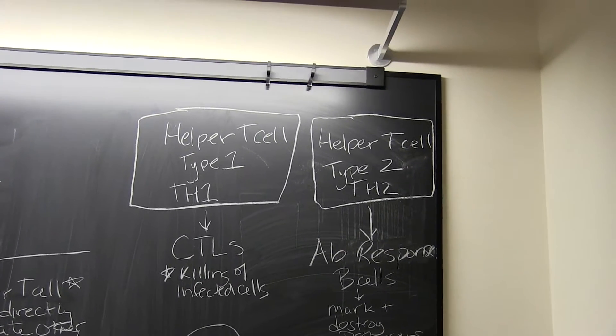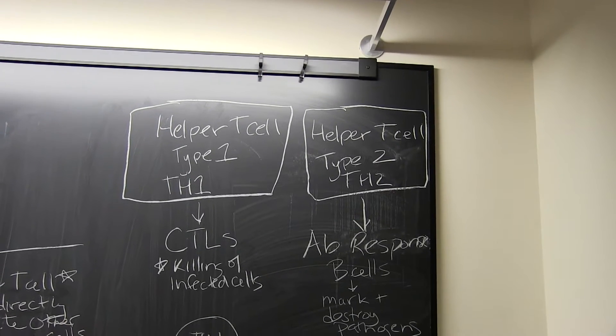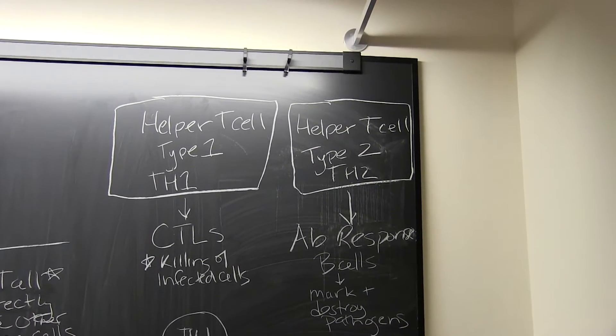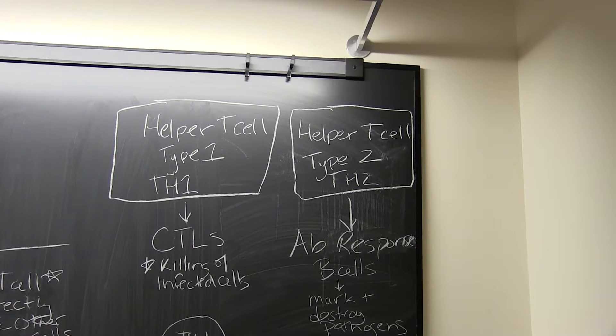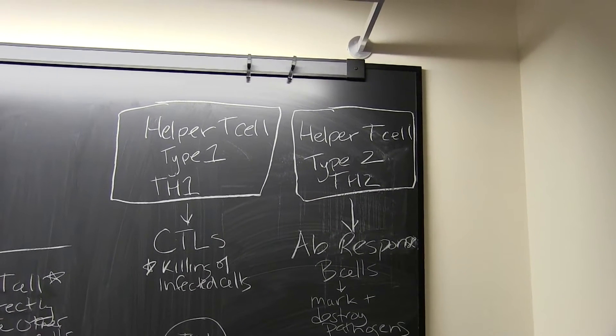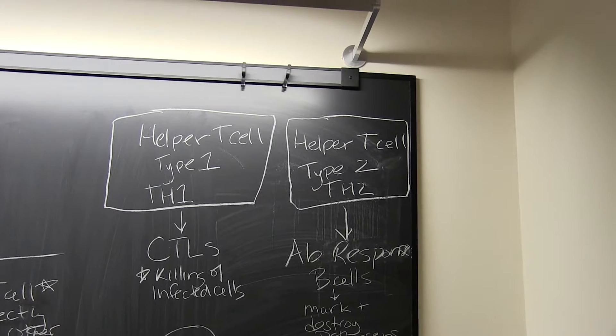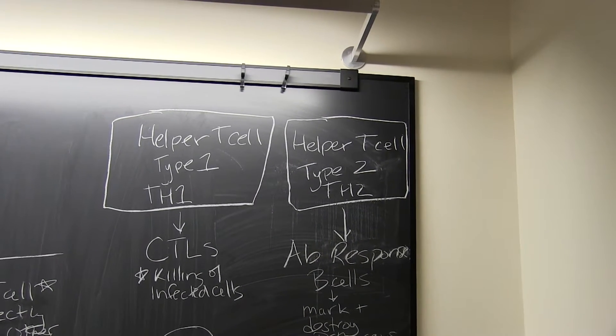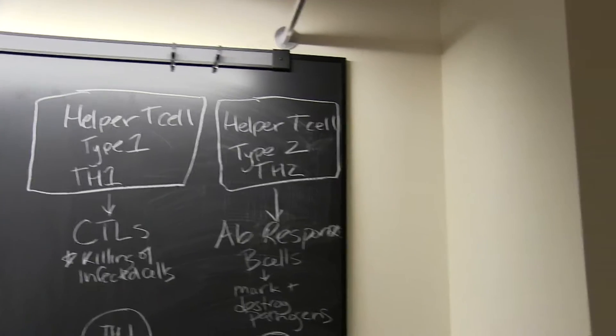Remember that CTLs don't kill pathogens. They don't destroy viruses or bacteria directly, but they can search out and find cells that are infected with those pathogens and cause those cells to self-destruct, a.k.a. apoptosis.